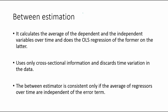The next estimation type is between estimation — this is estimation type 2; pooled was type 1. What it does is calculate the average of the dependent and independent variables over time, and then runs an OLS regression of the dependent variable on those averaged independent variables. It is pretty simple.